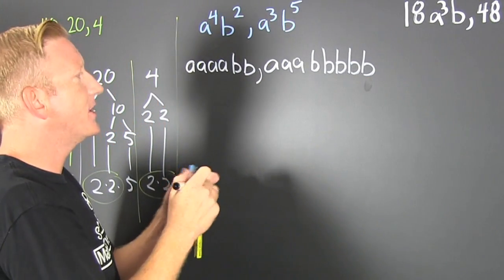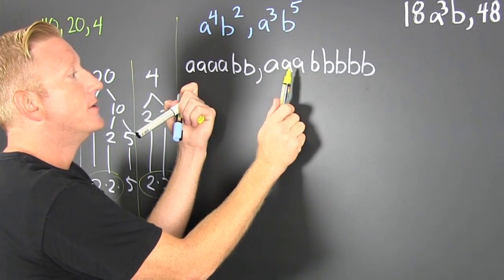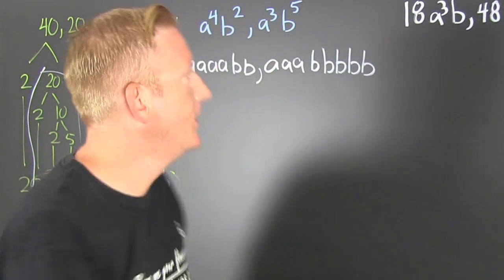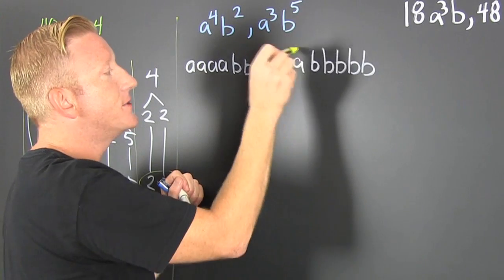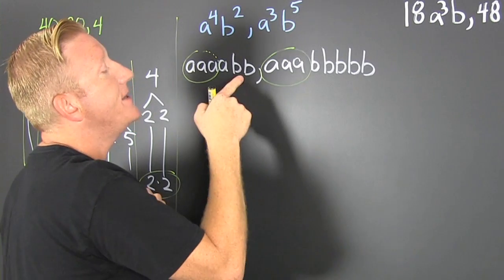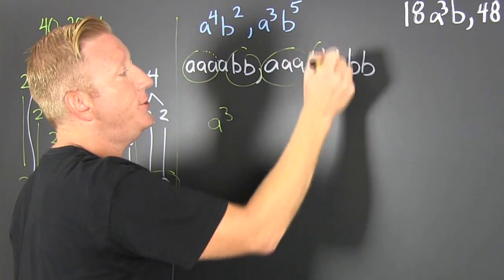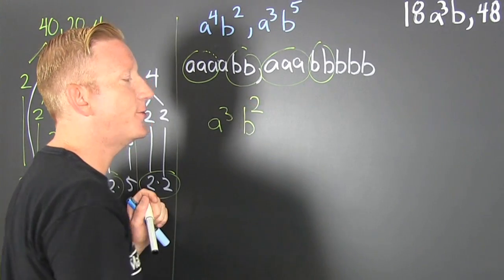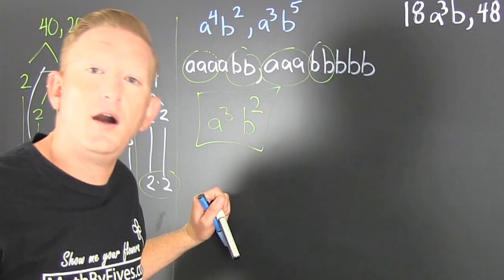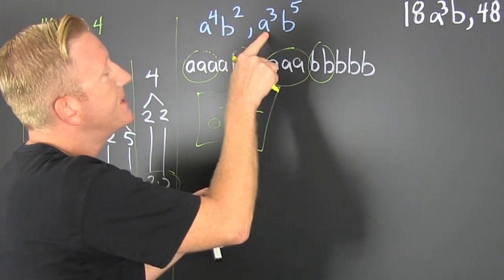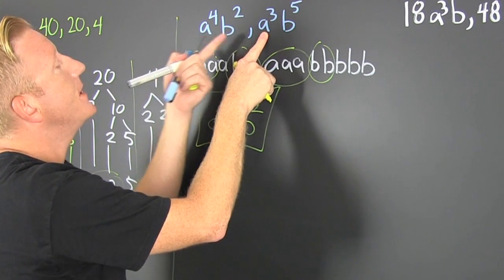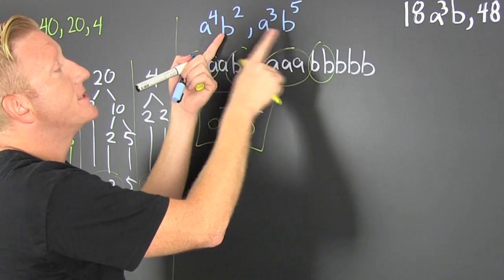For the greatest common factor, we're looking for the greatest number of each variable they have in common. That one has three a's, this one has four a's, so three a's is what they share — a to the third. For b's, this one has two b's, that one has five — so b squared. The GCF is a³b². The shortcut: just take the least exponent — whichever one has less, that's it.